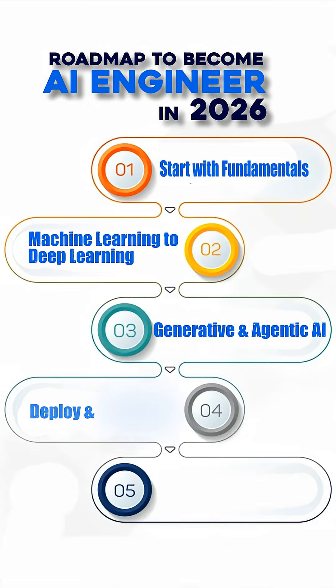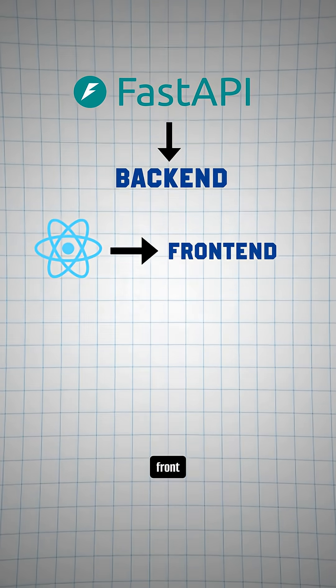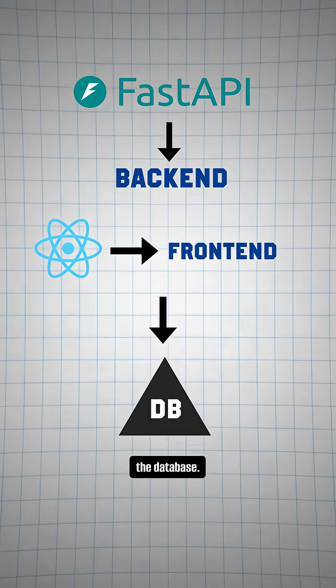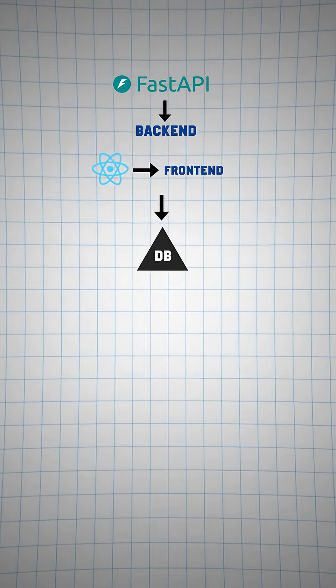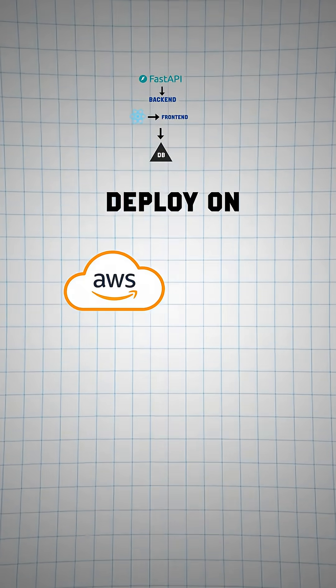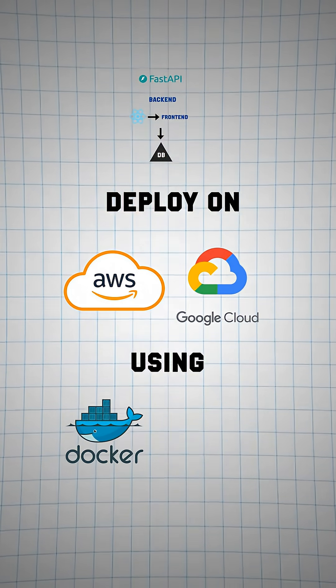Step 4: integrate these AI models and systems with full stack skills — build a FastAPI backend, a React frontend, and connect them to databases. After that, deploy on cloud platforms like AWS or GCP using Docker and CI/CD pipelines.